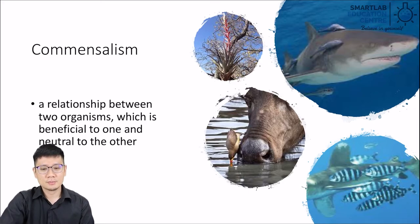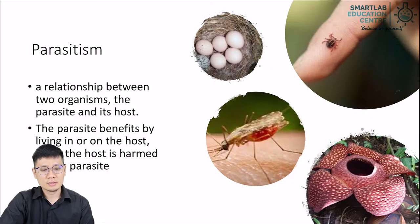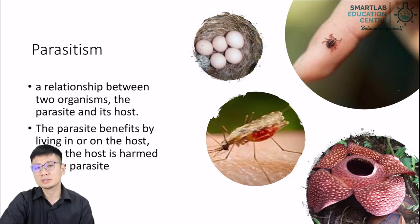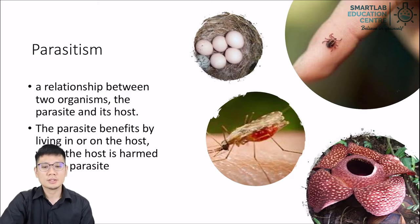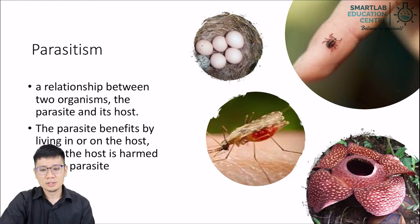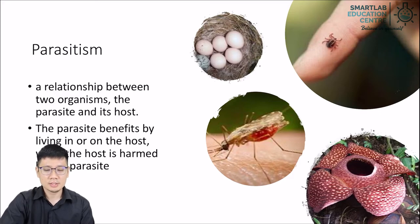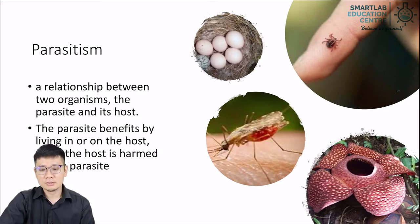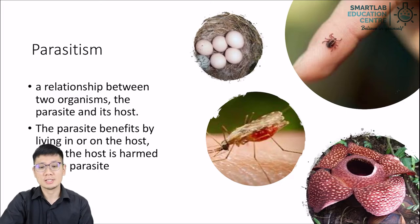The fourth type of relationship is parasitism. This is a relationship between two organisms where the parasite benefits by living in or on the host, and the host is harmed by the parasite. Simple examples would be mosquitoes sucking the blood of animals, and ticks or lice that do the same. Less commonly thought of is Rafflesia — the biggest and one of the smelliest flowers — which is actually a parasite. It grows on the roots, trunks, or branches of other trees and sucks the nutrients out of them, and it doesn't have its own leaves to photosynthesize.